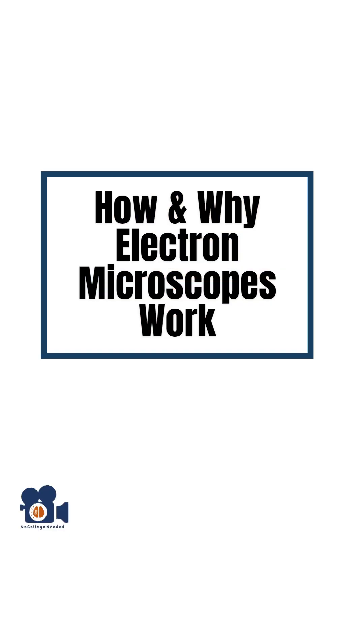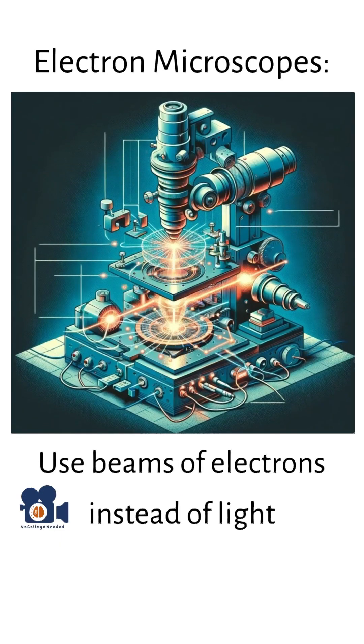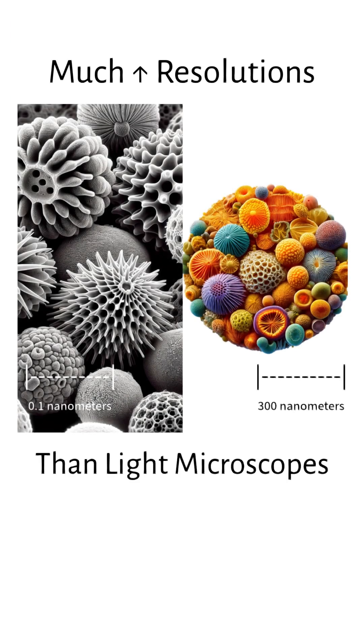This is my PhD in chemistry, and this is how and why electron microscopes work. Electron microscopes use beams of electrons instead of light to create images of samples at much higher resolutions than light microscopes.